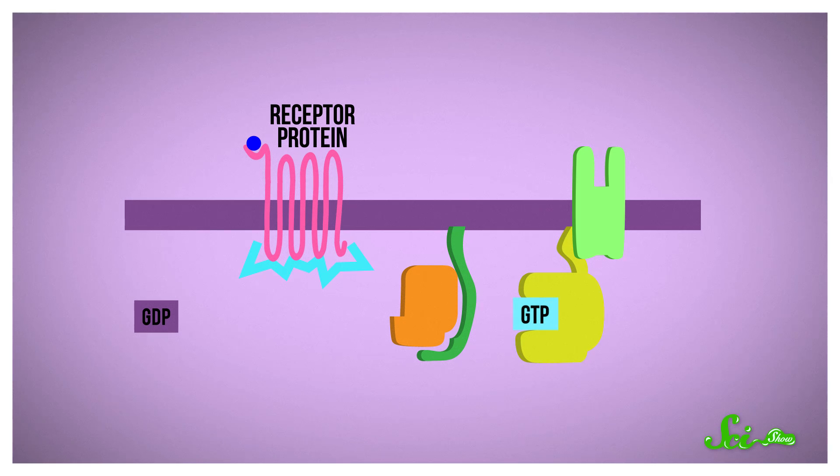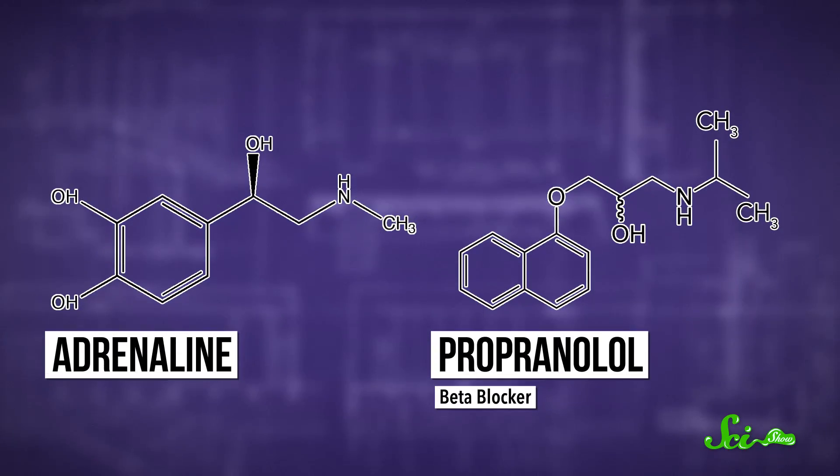eventually leading to that adrenaline rush feeling. Beta-blockers work by blocking this system. The drugs have similar structures to adrenaline and norepinephrine, so they can slot inside the same space on the receptors. But the beta-blockers don't fit snugly enough to cause the shift in the receptor that triggers the reaction.